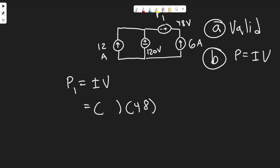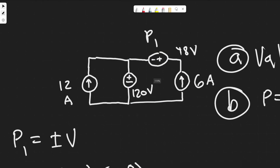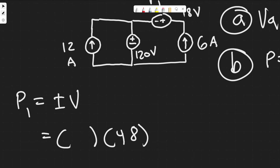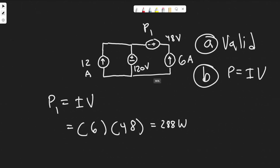What is the current going through this source? We know we have 6 amps traveling this way, and it's going to go through this voltage source. So the current is 6 amps. Therefore P1 equals 6 times 48, which gives us 288. Power is measured in watts, so P1 equals 288 watts.